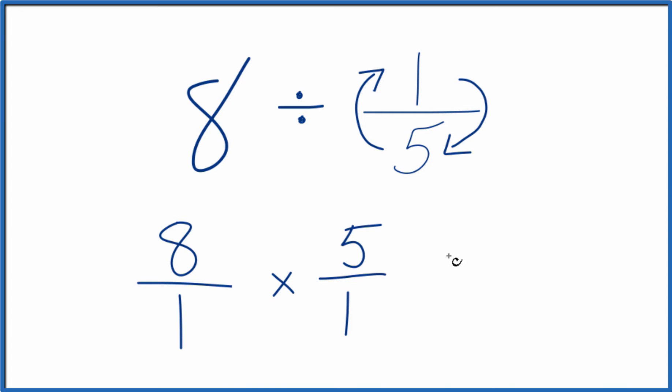Now, when we multiply fractions, we multiply the numerators and then the denominators. So 8 times 5, that's 40. And 1 times 1 is 1.